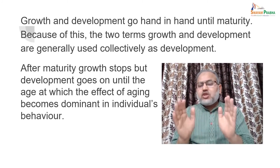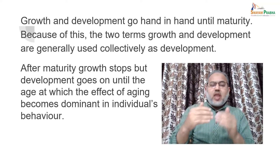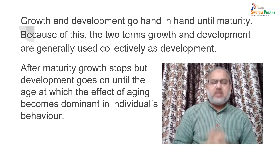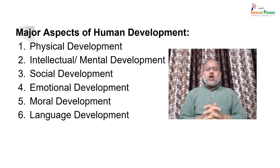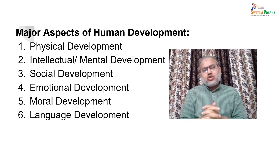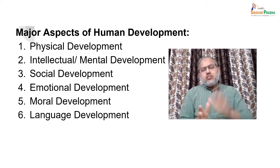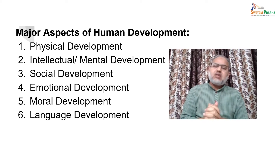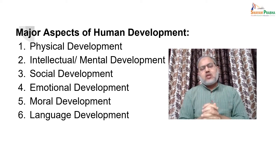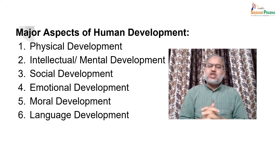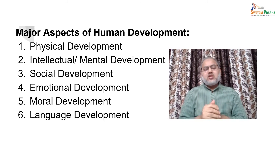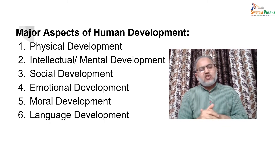After maturity, growth stops, but development goes on until the age at which the effects of aging become dominant in an individual's behavior. Now, coming to the various aspects of development — we are going to talk about six major aspects: physical development, intellectual or mental development, social development, emotional development, moral development, and language development.